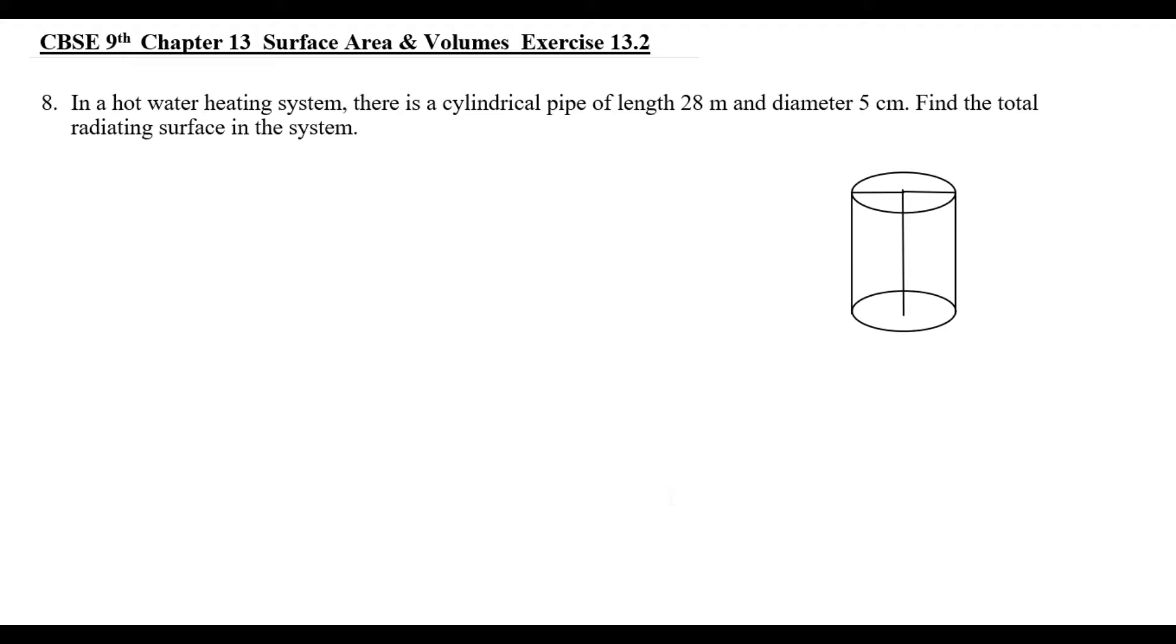Radiating surface is called heat radiating surface. So, heat radiating surface on the cylinder pipe. The height is called length. Height is 28m. Then, diameter is 5cm. So, we have diameter is 5cm and height is 28m.